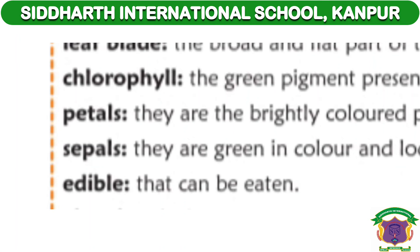Number 5: Edible. E-D-I-B-L-E. Dash — that can be eaten. Full stop.